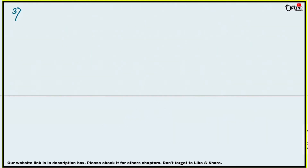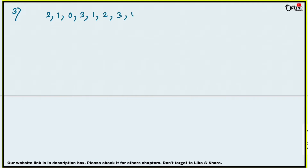Now next, sum number 3: calculate the mean and the median of the numbers 2, 1, 0, 3, 1, 2, 3, 4, 3, 5.